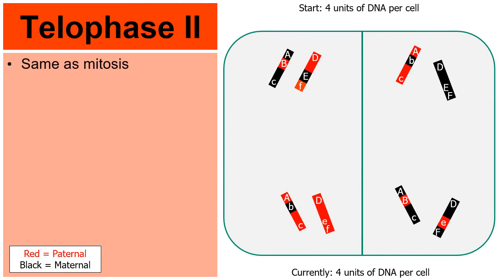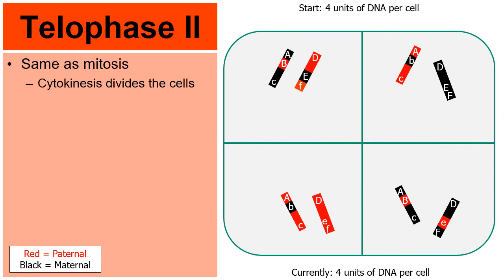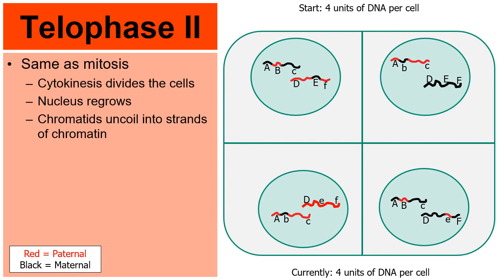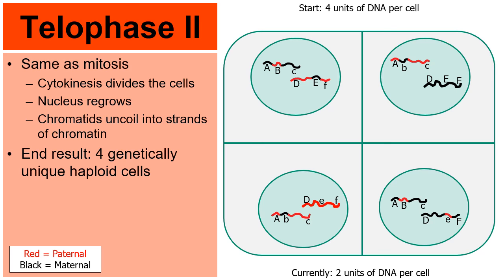In telophase II, cytokinesis divides the two cells into four cells. The nucleus begins to regrow in all four cells, and the chromatids unwind into the loose linear versions of DNA known as chromatin. Because of the second round of dividing, every cell now only has two units of DNA — we started with four and now have two. We've made haploid cells. If you pause the video and look over the A through F alleles, you'll notice all four cells are different from one another, because of the recombining process — crossing over from prophase I.